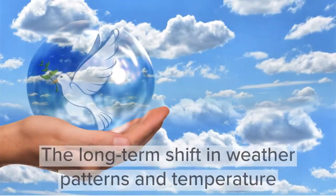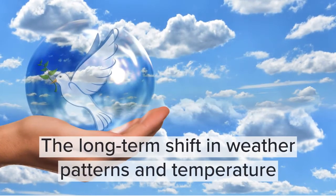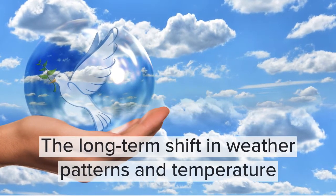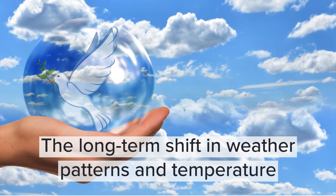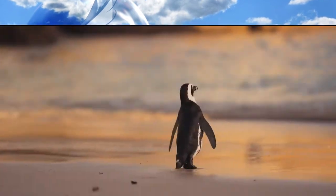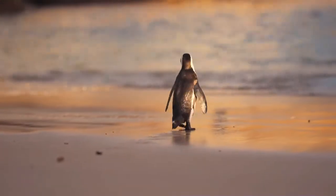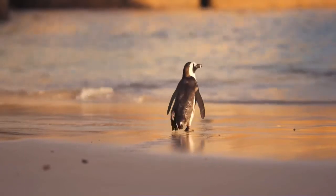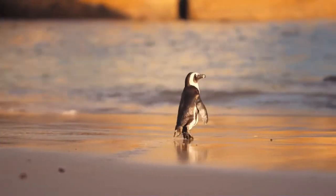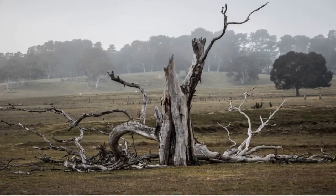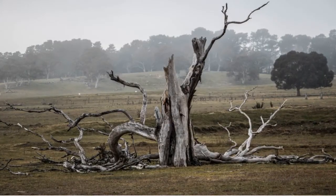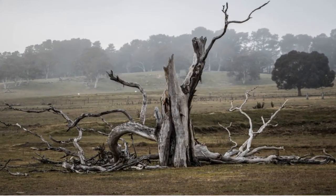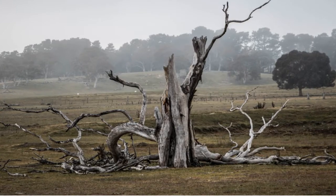2. Climate change is defined as the long-term shift in weather patterns and temperature. Due to climate change, animals and plants can no longer thrive in some ecosystems. Animals may migrate to look for favorable conditions. Since plants are immobile, they cannot move to other areas, so they are likely to die.